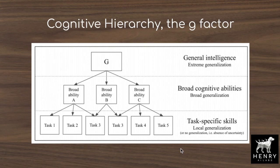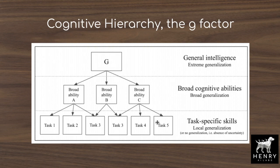Now let's talk about the cognitive hierarchy and finding the G-factor — the general intelligence shared amongst all specific skill-based tasks. We have all these little tasks like different IQ tests, and we'd imagine there's a shared broad ability and a general intelligence G-factor. The best analogy is physical fitness: lung capacity at the top, then bench press, squatting, marathon running, and tennis skill below. We'd expect machine learning models performing visual classification or question-answering across many data sets to share this common ability.